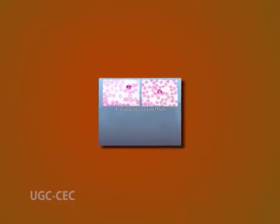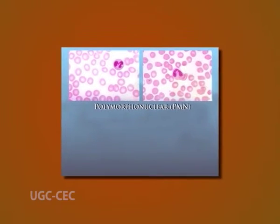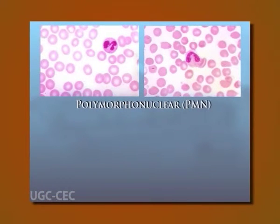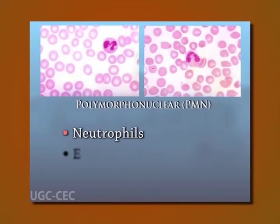Granulocytes are polymorphonuclear, or PMN, leukocytes with 2 to 5 lobes. The granulocytes are classified as neutrophils, eosinophils, and basophils based on their cellular morphology and cytoplasmic staining characteristics. Mast cells are also included under granulocytic cells.